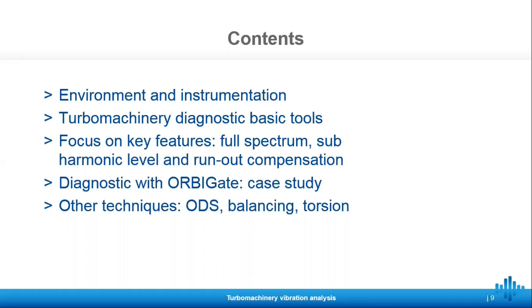Here's an overview of what we're going to be covering in this video. We'll go over the environment and instrumentation, and then we'll cover the turbo machinery diagnostic basic tools. After that, we'll focus on the key features, which are full spectrum, sub-harmonic level, and run-out compensation. Then we'll show the diagnostic with OrbiGate with a case study, and then we'll show other techniques that you can use, such as ODS, balancing, and torsion.